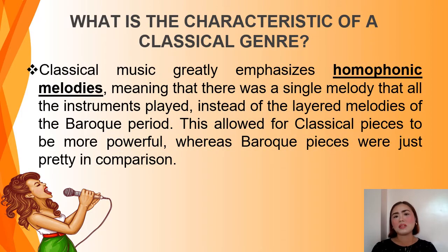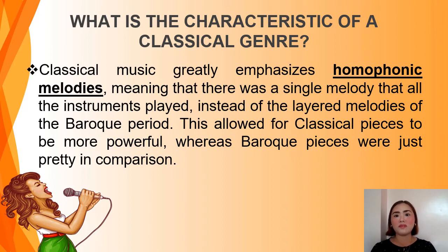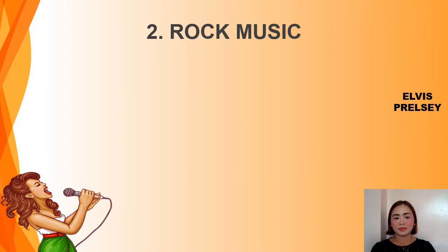What is the characteristic of the classical genre? Classical music greatly emphasizes homophonic melodies, meaning there was a single melody that all the instruments played, instead of the layered melodies of the Baroque period. This allowed for classical pieces to be more powerful, whereas Baroque pieces were just pretty in comparison.